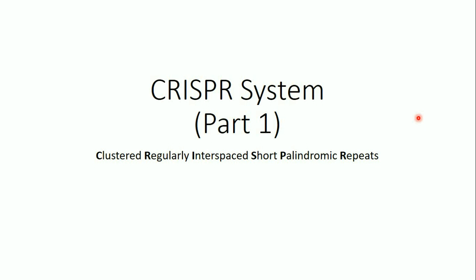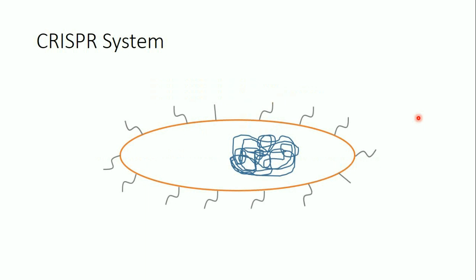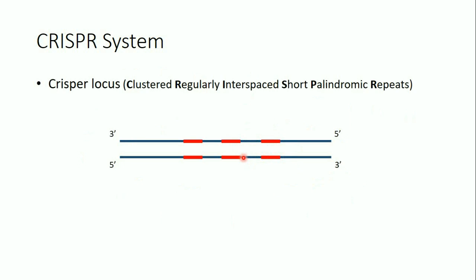What is the CRISPR system? The CRISPR system was first found in bacterial cells, or in prokaryotic cells. The CRISPR system is like a type of immune system in these bacterial or prokaryotic cells. It's a region on the bacterial genome called the CRISPR locus. CRISPR stands for clustered regularly interspaced short palindromic repeats.